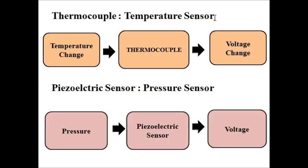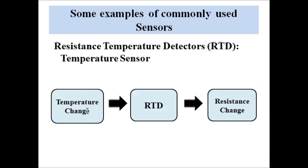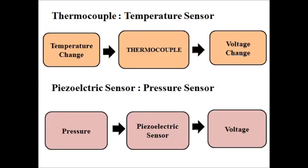Next is the thermocouple, also a temperature sensor. It converts change in temperature directly into voltage change, so there is no need for a signal conditioning circuit because we are directly getting an output in terms of voltage. Unlike the RTD, which converts temperature change into resistance change and then requires a signal conditioning circuit to convert it into voltage. Then we have the piezoelectric sensor — it is a pressure sensor that converts applied pressure directly into a voltage signal.